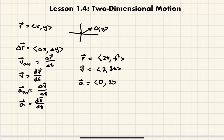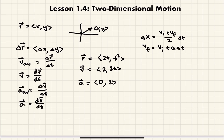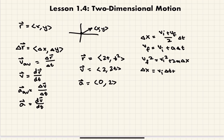We can also apply kinematic equations with vectors using the exact same formulas. The five equations are: Δx = ((v_i + v_f)/2)·Δt; v_f = v_i + a·Δt; v_f² = v_i² + 2a·Δx; Δx = v_i·Δt + ½a·Δt²; and Δx = v_f·Δt − ½a·Δt². All you have to do is take each component of the vector and plug in the values.